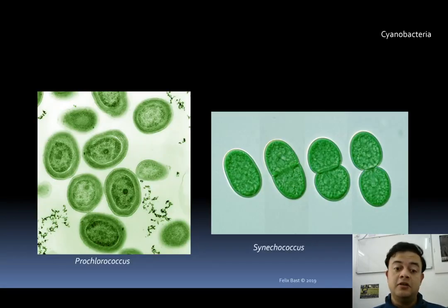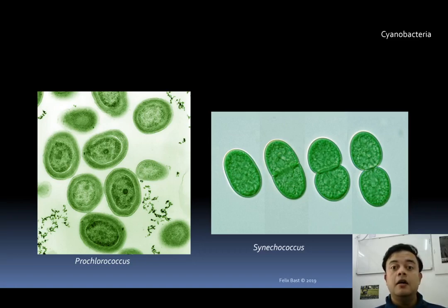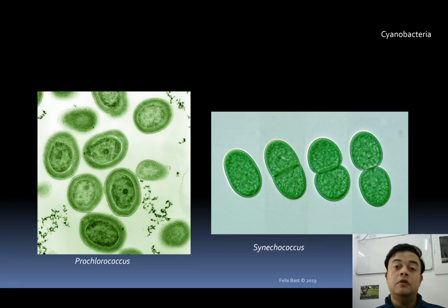Two very famous cyanobacteria — Prochlorococcus and Synechococcus — are alone responsible for almost two-thirds of the oxygen in the air we breathe. On the flip side, these two organisms are also responsible for two-thirds of the carbon sequestration happening in the world. For the last two billion years, these organisms have been removing excess CO2 from the atmosphere, integrating it into the soil, and when they die it goes to the ocean bed and forms the long-chain hydrocarbon molecules we now call fossil fuels.